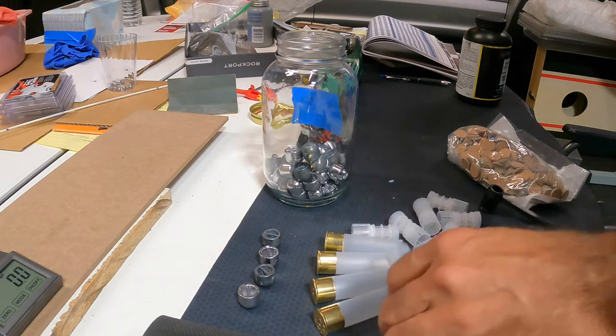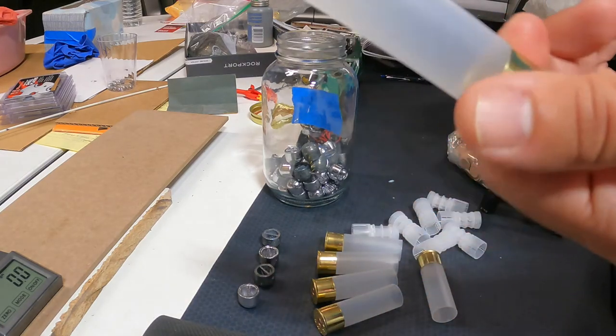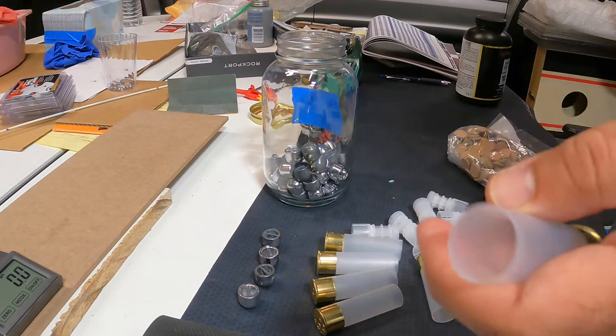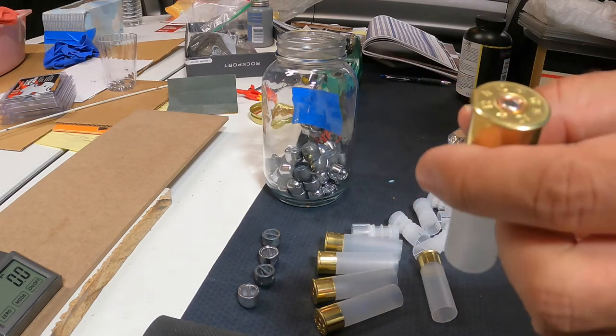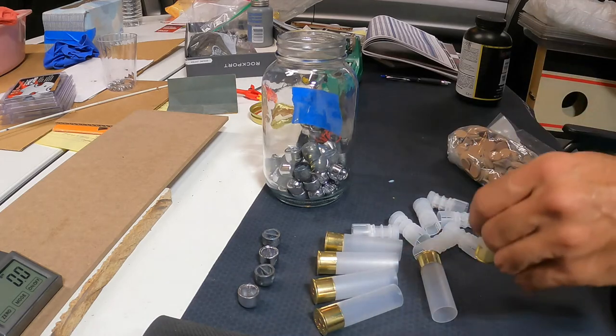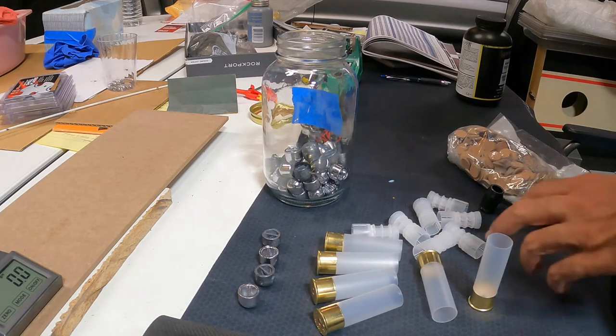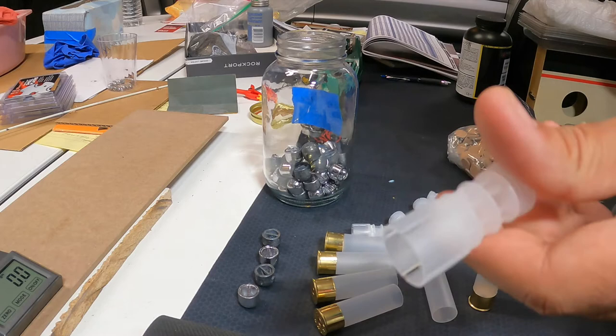Got another slug load here for you. These are the Chedite ballistic products brand new skiv two and three quarter with the Chedite primer. They're like 15 to 17 cents each. This is the Lightning...